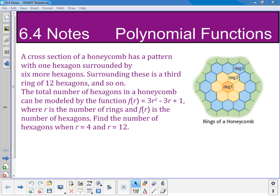The example at the top of your notes page says a cross-section of the honeycomb has a pattern with one hexagon surrounded by six more hexagons. Surrounding these is a third ring of 12 hexagons and so on.